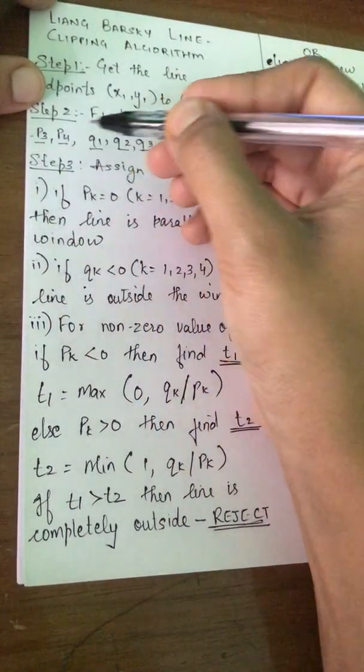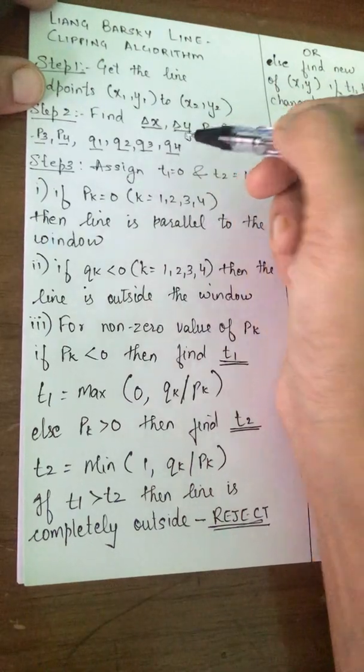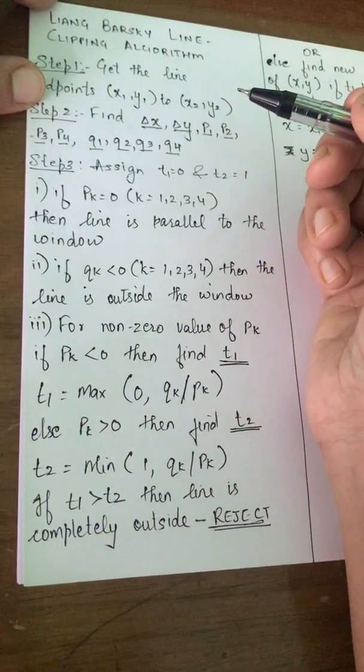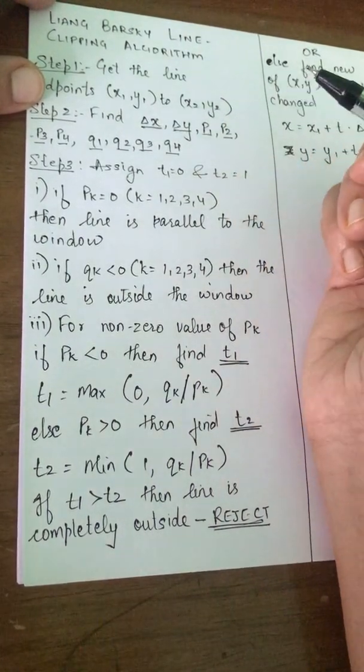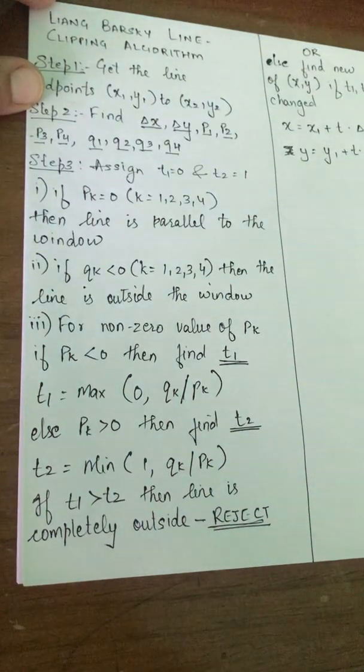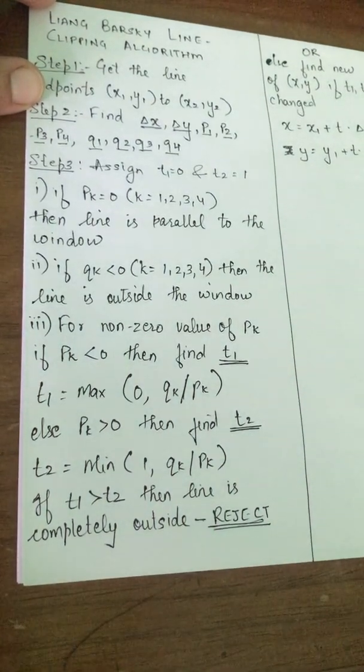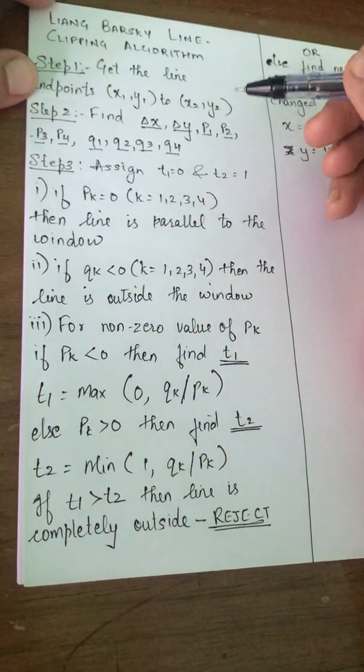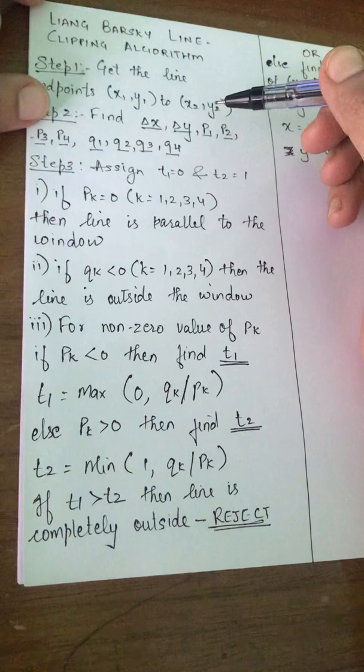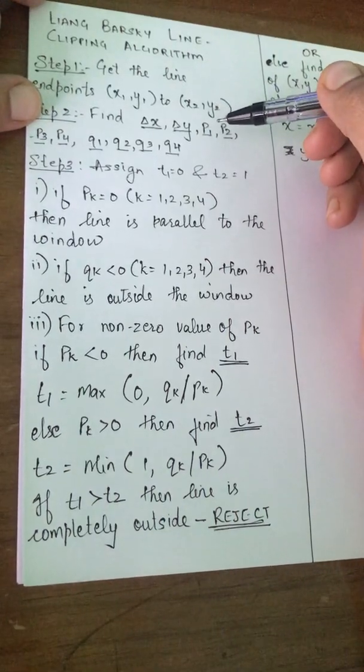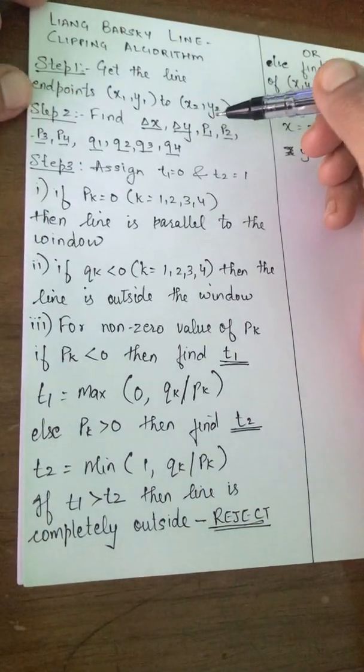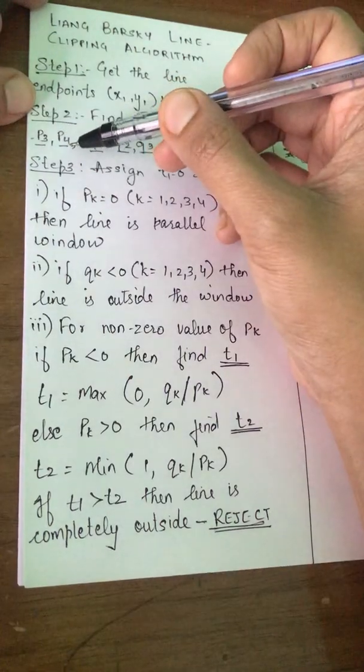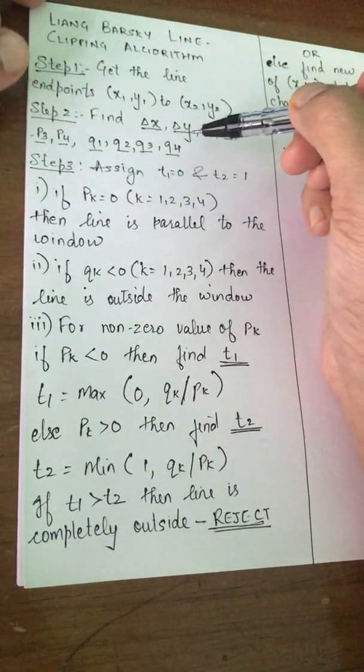Now, p1, p2, p3, p4 and q1, q2, q3, q4 are the parameters that we have computed in the derivation of Liang-Barsky line clipping algorithm that we have seen in the previous video. If you do not know what I am talking about, I suggest you see the video which was uploaded previously about the derivation where we have derived the formula for p1, p2, p3, p4 and q1, q2, q3, q4.